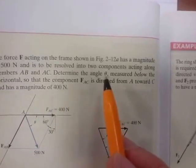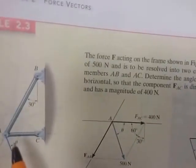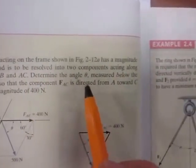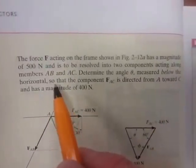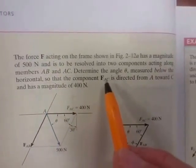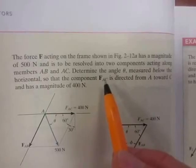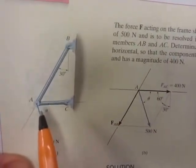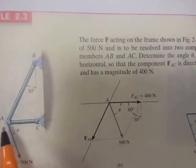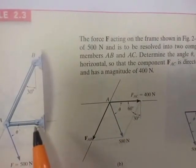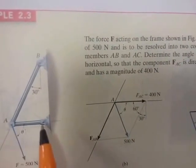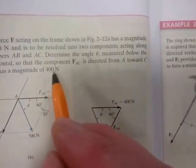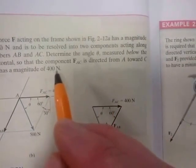Determine the angle theta measured below the horizontal so that the component FAC — the force in that member — is directed from A to C and has a magnitude of 400 Newton.